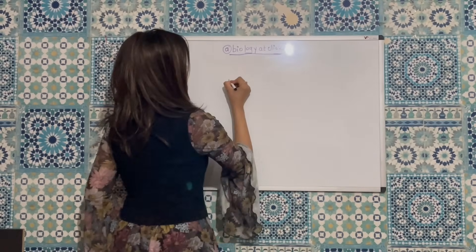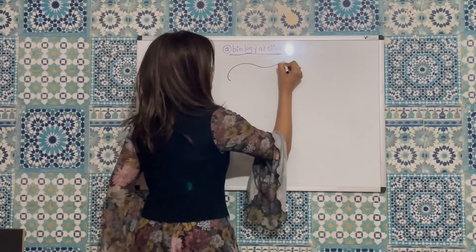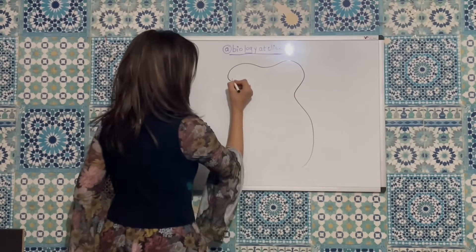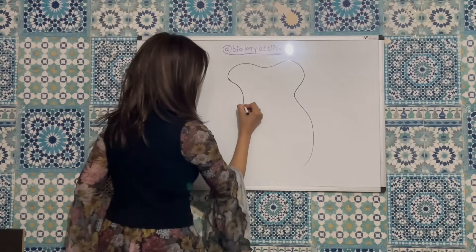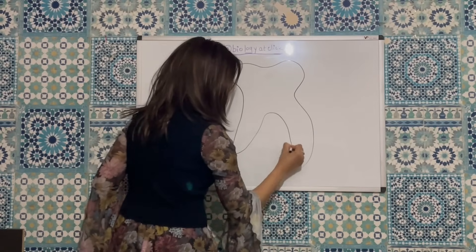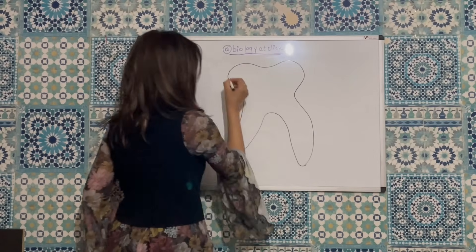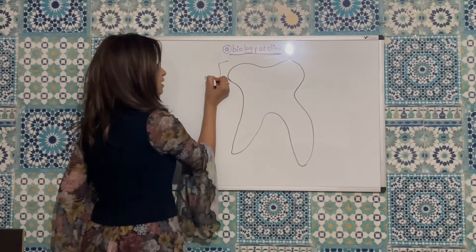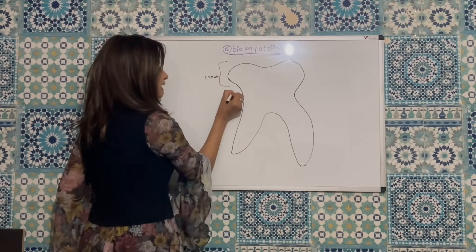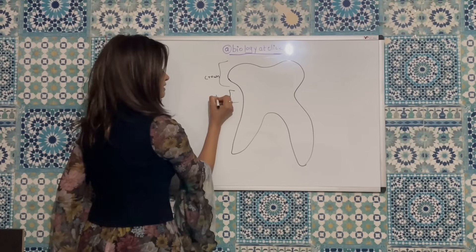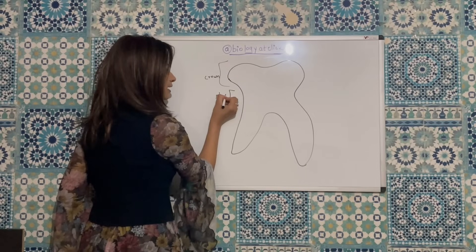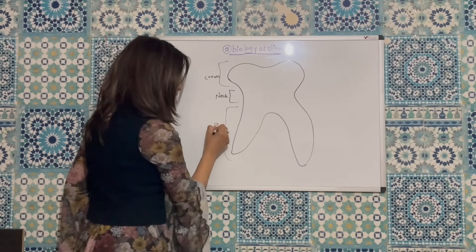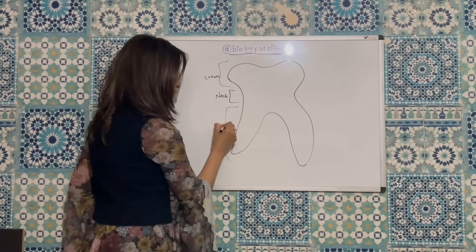The structure of a tooth is broadly divided into three categories. The top part of the tooth is termed as crown, the middle layer is called the neck, and the bottom layer of the tooth is called the root.